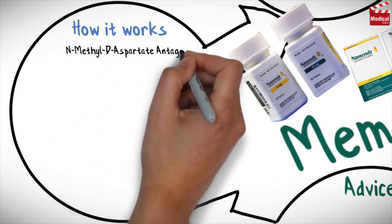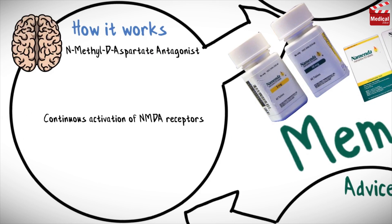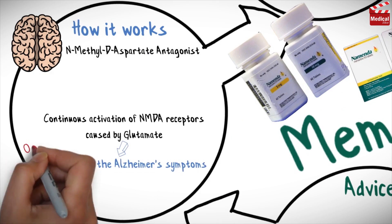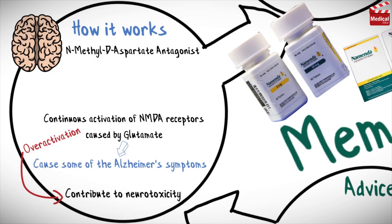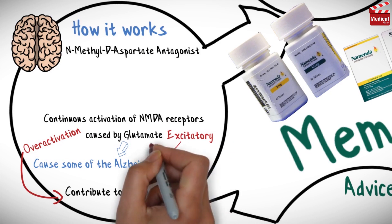Memantine is an N-methyl-D-aspartate receptor antagonist. Continuous activation of the N-methyl-D-aspartate receptors in the central nervous system, caused by glutamate, is thought to cause some of the Alzheimer's disease symptoms. This overactivation is thought to contribute to neurotoxicity due to the excitatory properties of glutamate.